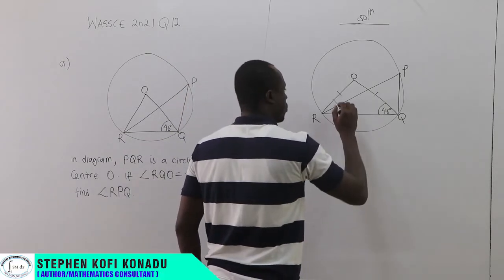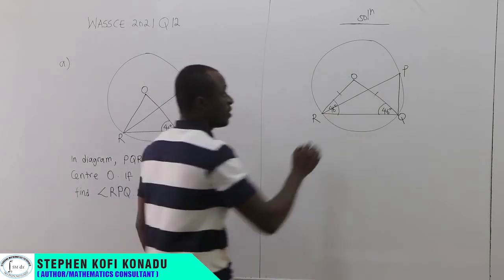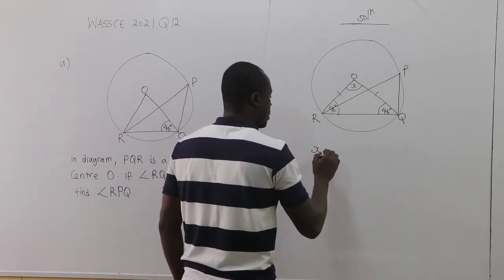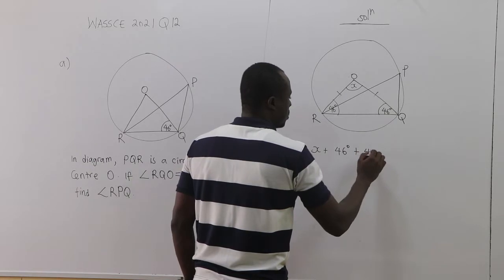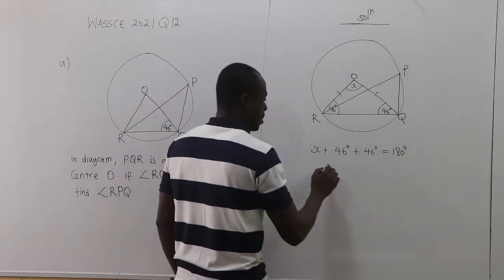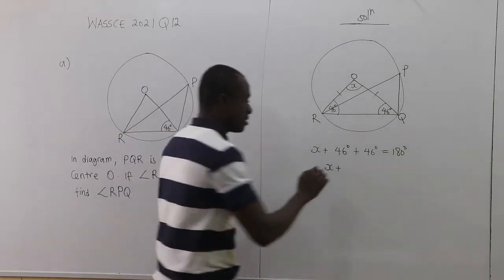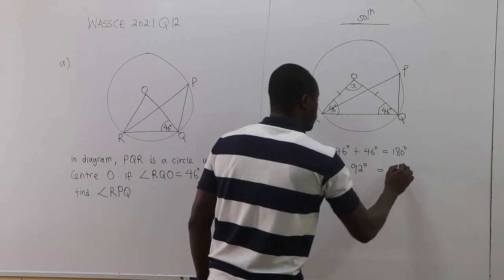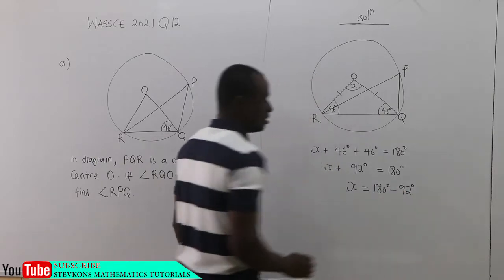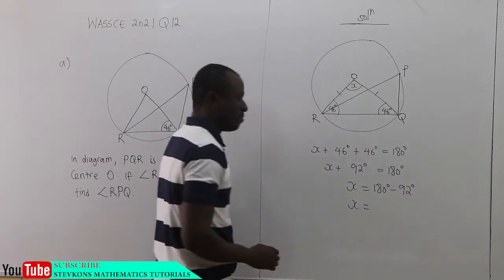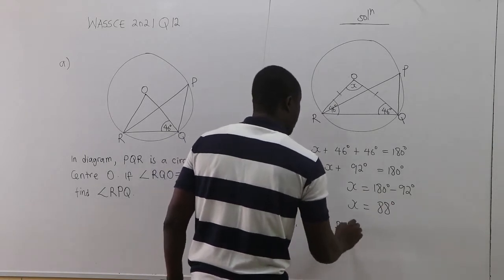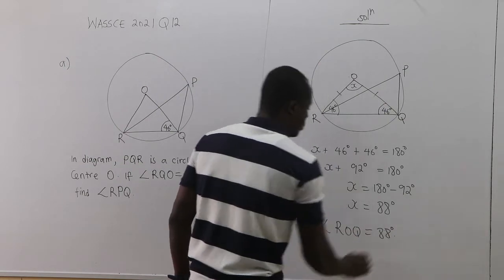Since the triangle is isosceles, if angle RQO is 46 degrees, then angle QRO is also 46 degrees. We want to find angle ROQ. The sum of angles in a triangle is 180 degrees. So ROQ = 180 − (46 + 46) = 180 − 92 = 88 degrees. Therefore, angle ROQ is equal to 88 degrees.